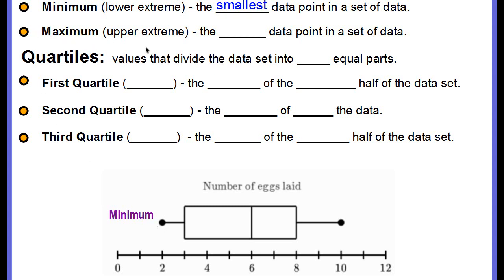The maximum, or upper extreme, will be the largest data point in a set of data. And here is the maximum point, or the upper extreme.